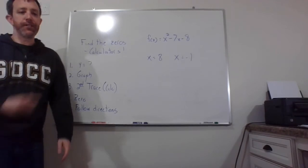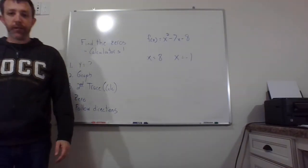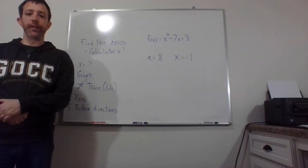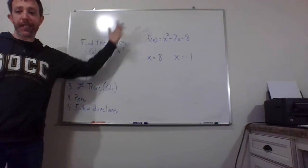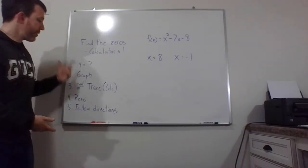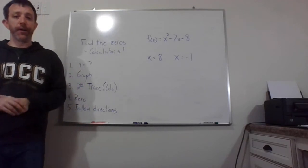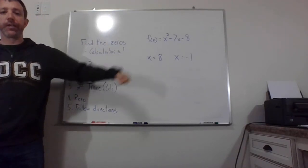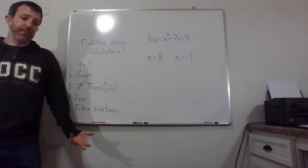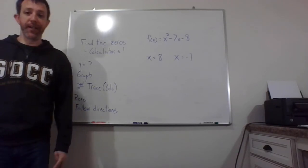All right, so to finish up this section, we have some information about finding zeros using your calculator. So I have directions here. I have an example that I did on my calculator. So you know, you can try to follow my directions to get the answers that I have over there because you're not going to see my calculator. That just won't work.